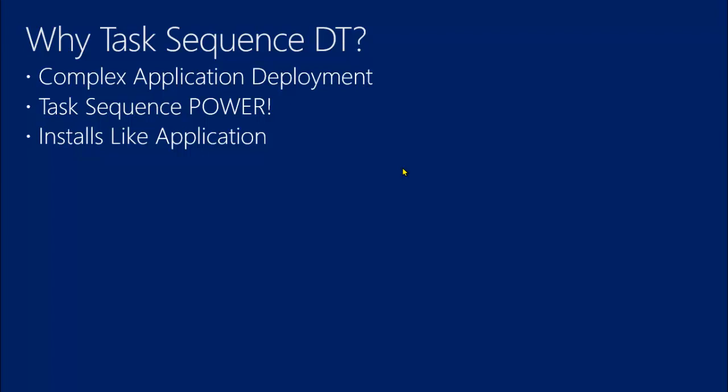This will install like an application, so it will show up in Software Center just like normal. When the task sequence is kicked off, you will see the task sequence progress bar. In 2006 you do see it — you might not have in 2002. But the application will still silently install even though the task sequence progress is showing. The applications will install just like you would expect from a task sequence deployment.